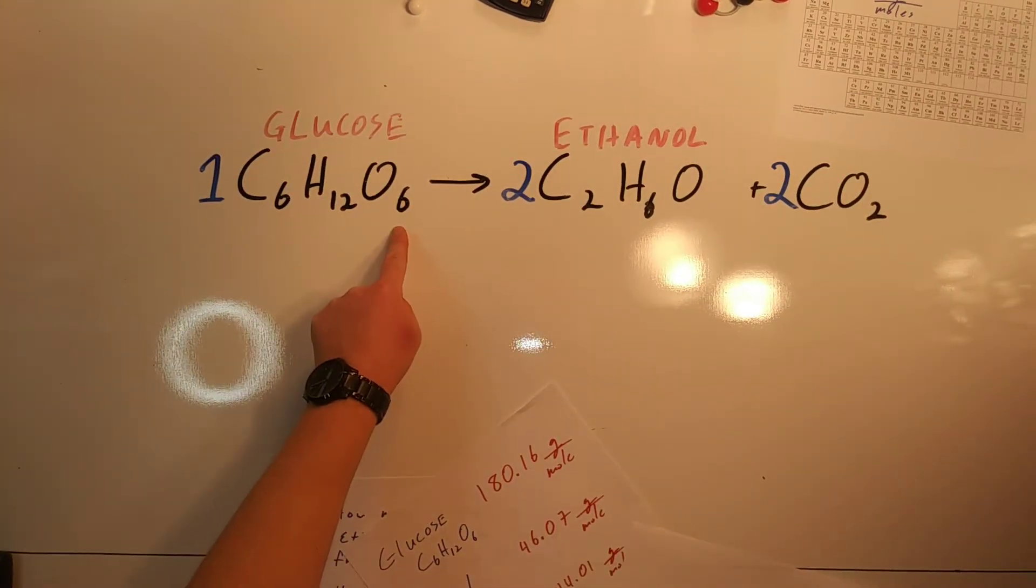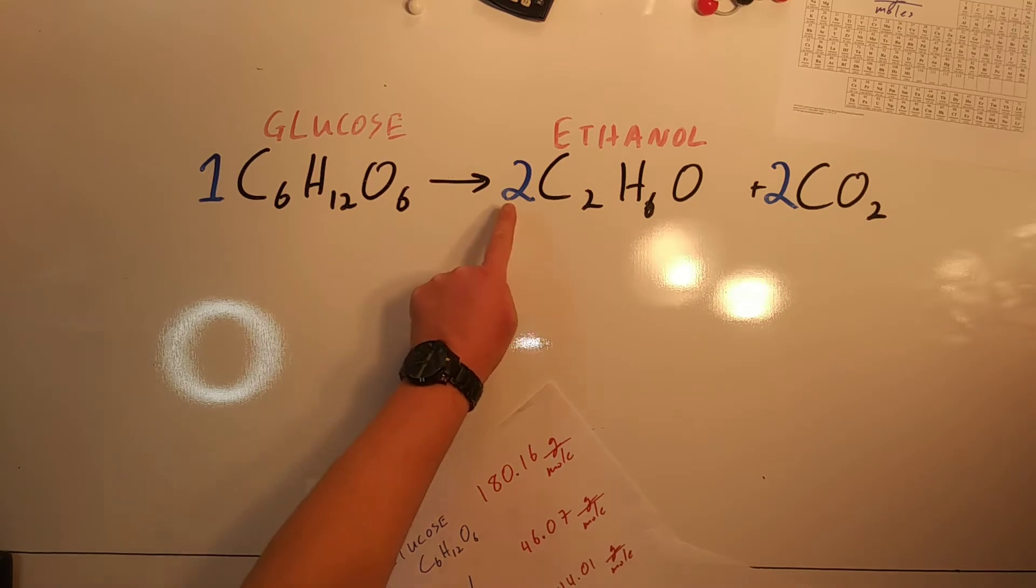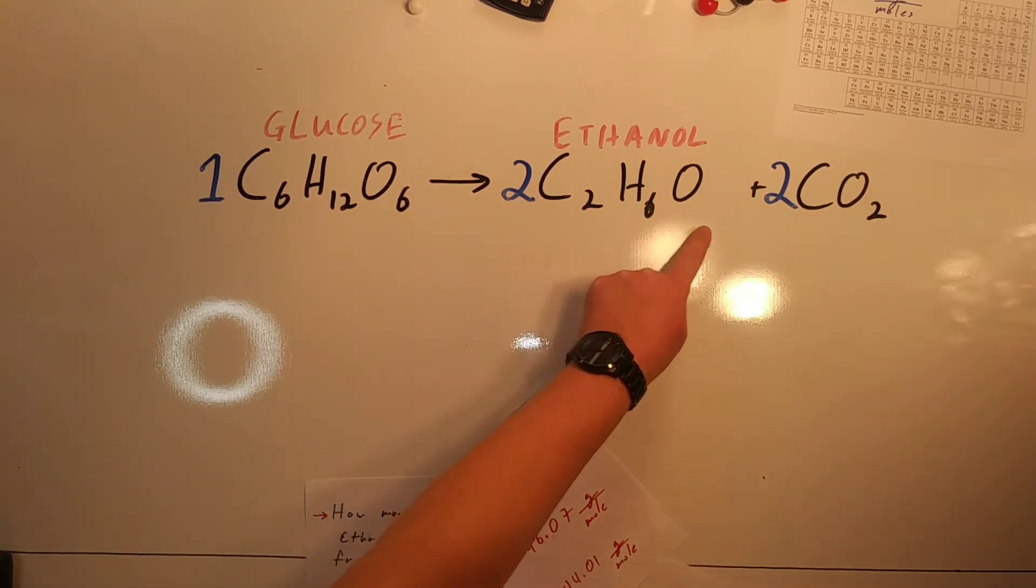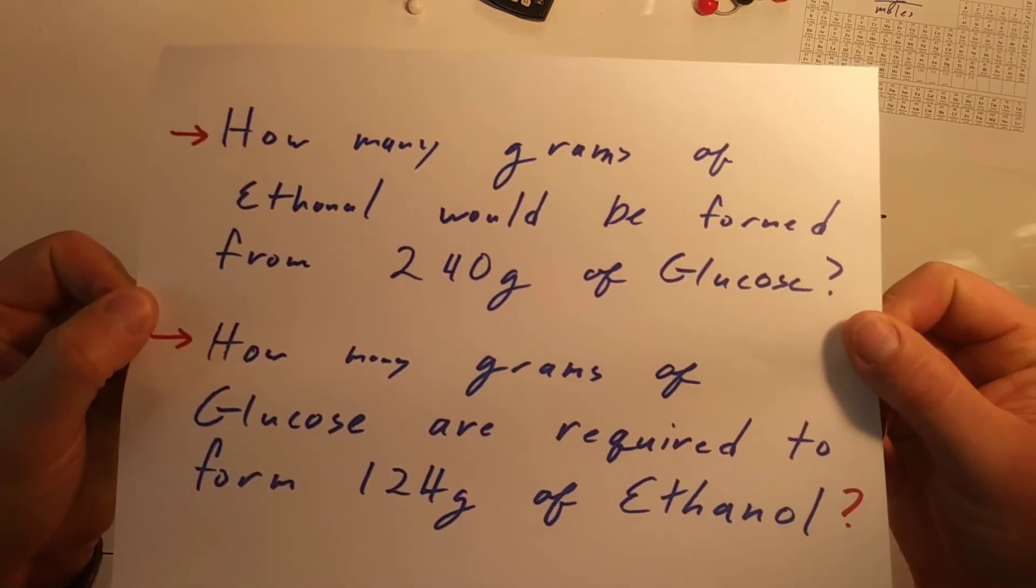This is our chemical reaction of fermentation of glucose. Fermentation to produce two molecules of ethanol and two molecules of CO2. Please pause.